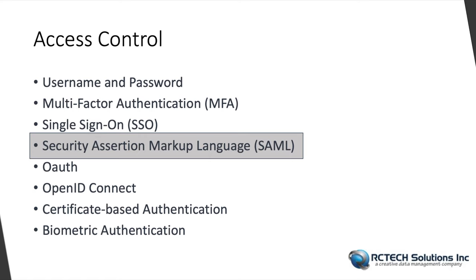Security Assertion Markup Language (SAML) is an XML-based standard used for exchanging authentication and authorization data between identity providers and service providers. It enables seamless and secure single sign-on across different organizations and cloud services. SAML is commonly used in cloud-based identity federation scenarios.